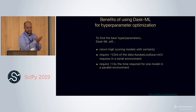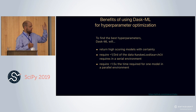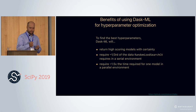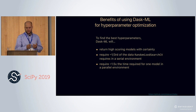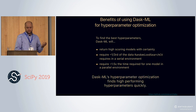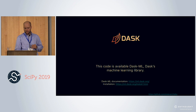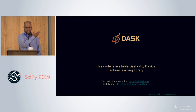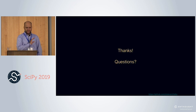That's about all the time I have. To summarize: DaskML's hyperparameter optimization will find high-performing hyperparameters quickly — with fewer passes through the data, more confidence, and all of that. Hyperband is ready for Dask and Dask is ready for Hyperband. This code is available through DaskML, Dask's machine learning library. Documentation and installation are available. That's all I have time for.